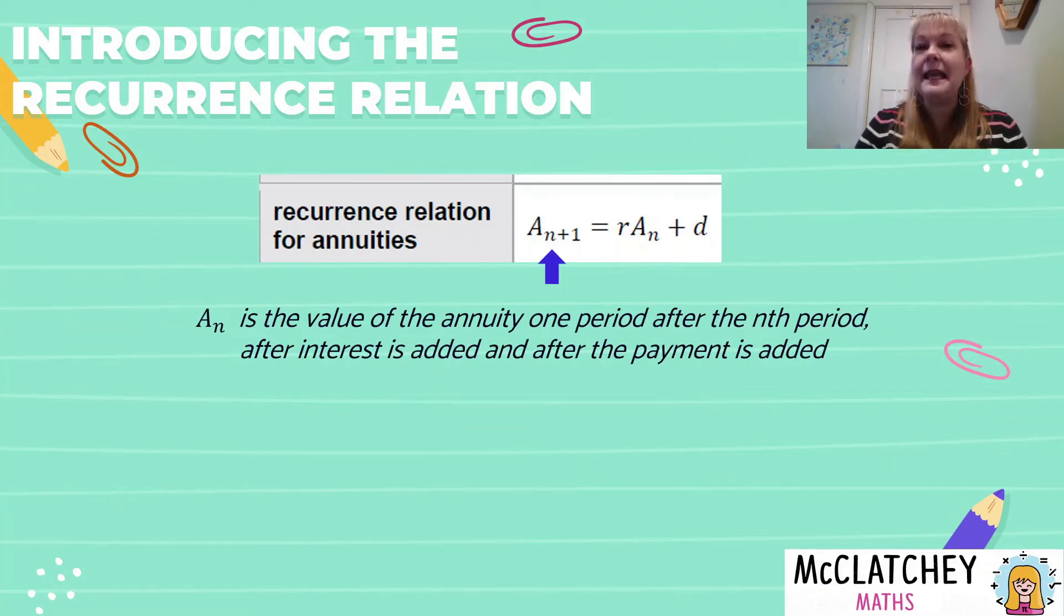And all that means it's like a naming convention. So all it means is it's the value of our annuity at period N. So we can actually take this recurrence relation at any point in the life of the annuity, whether it's the 20th period, that would be A20, or the 100th period, that would be A with a subscript of 100. What we're doing is finding the value of the annuity at that single point in time, we add the interest to it, and then we add the payment afterwards.